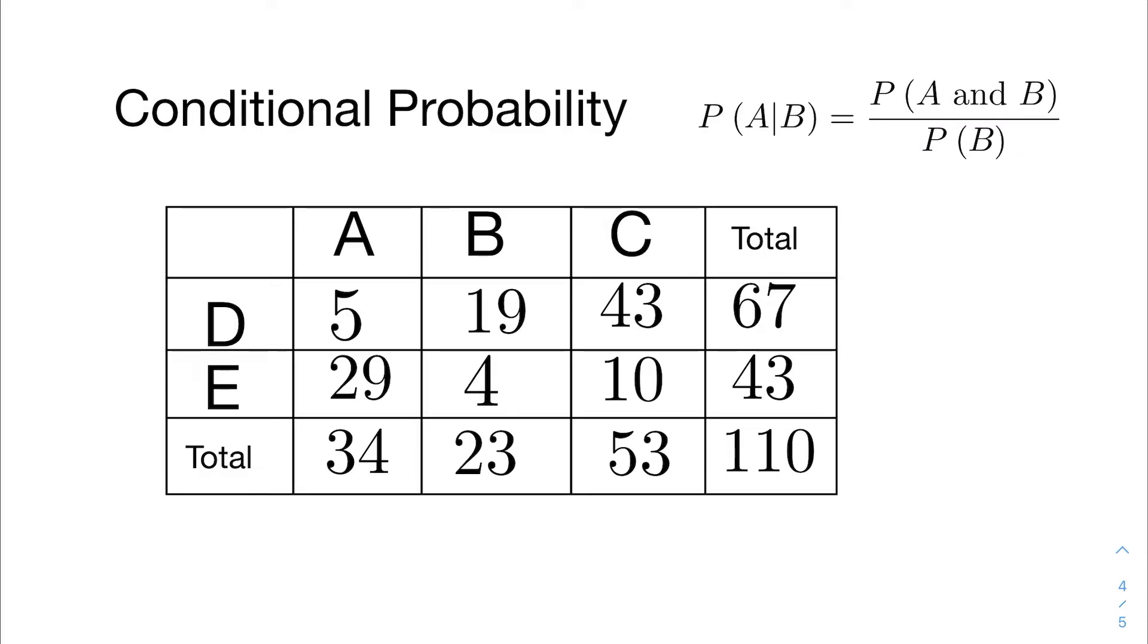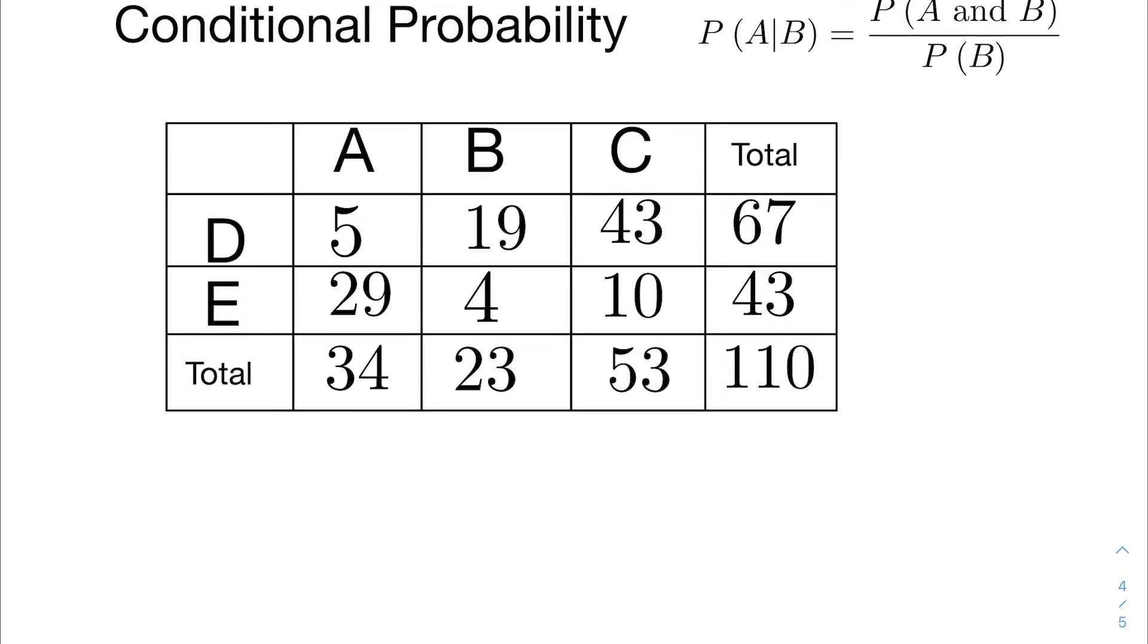So let's take a look at one from the table here. Let's find the probability of C given E. Well, to find the probability of C given E, it would be the joint probability of C and E divided by the marginal probability of E, the one it's conditioned on. The joint probability of C and E comes from this row and column where C and E intersect. That cell right there is 10, and that's 10 out of 110, 10 out of the total 110.